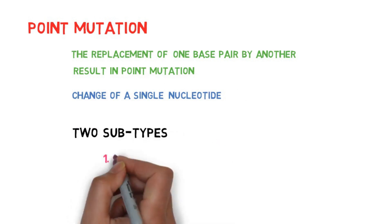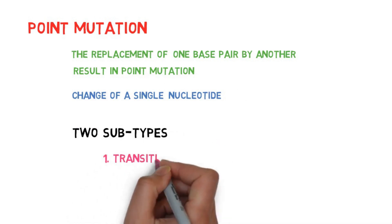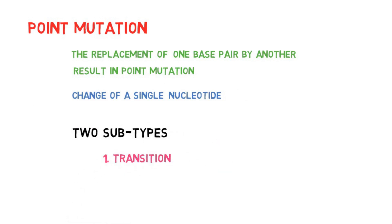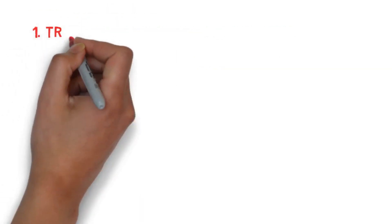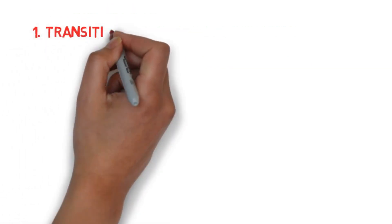The first subtype is transition and the second is transversion. Now we see transition.